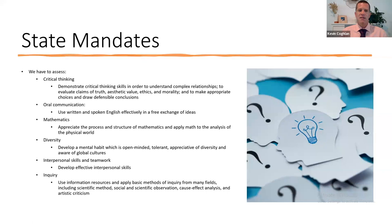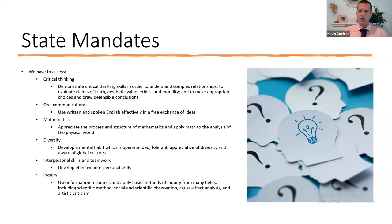Not every course can be evaluated for diversity, but we have several classes at Edison that can be used for diversity. Those classes have been identified and we built a rubric to figure out how to measure it. What we're supposed to be measuring, according to the state, is whether students are developing a mental habit which is open-minded, tolerant, appreciative of diversity, and aware of global cultures. As an assessment committee, along with other departments, we have worked on rubrics and developed measures to evaluate diversity at Edison State.